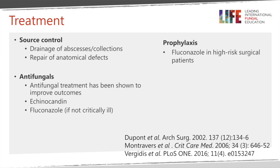Treatment of intra-abdominal infection requires source control as a key priority — draining abscesses or collections and repairing any anatomical defects that lead to recurrent infection. Antifungal treatment has been controversial, but recent studies show patients receiving antifungals had better mortality outcomes. Echinocandins such as caspofungin, micafungin, or anidulafungin are agents of choice. Fluconazole can be used alternatively if the patient is not critically ill and has not been previously exposed to azole treatment.